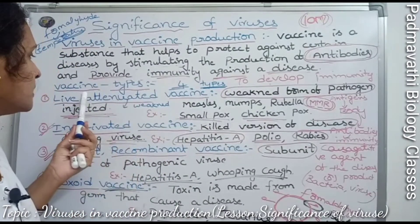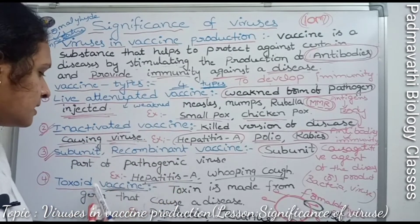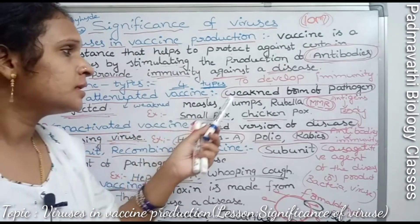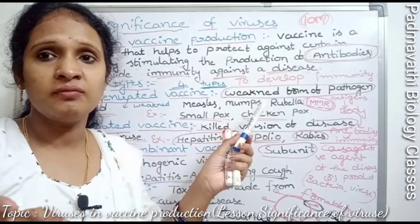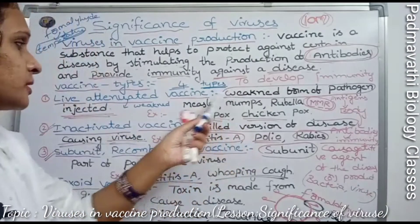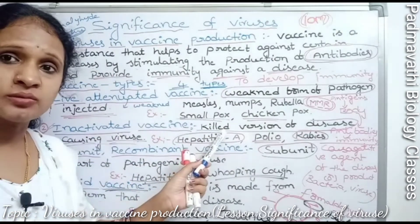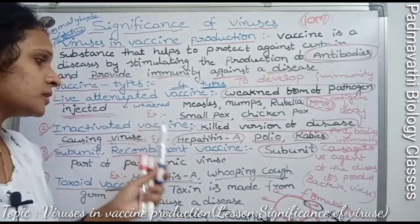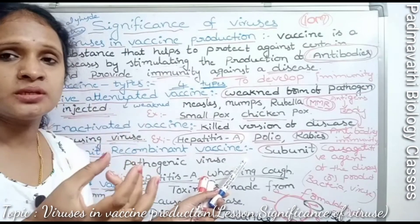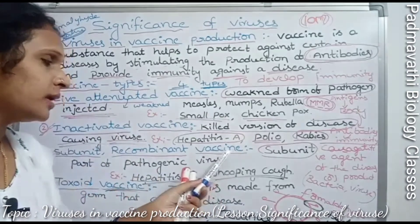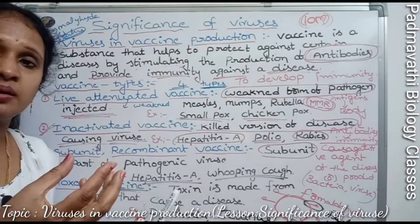Summary of the four vaccine types: live attenuated vaccines use a weakened form of the pathogen; inactivated vaccines use a killed version; subunit recombinant vaccines use specific parts of the pathogen body; and toxoid vaccines use toxoids derived from the pathogen.